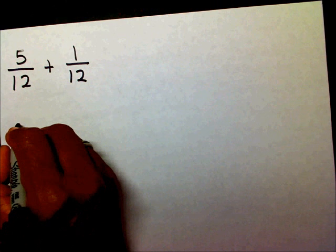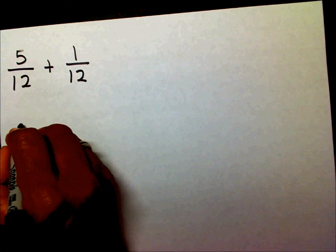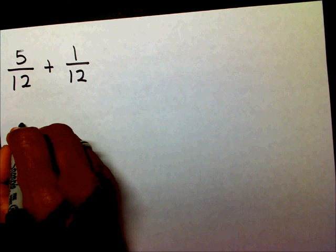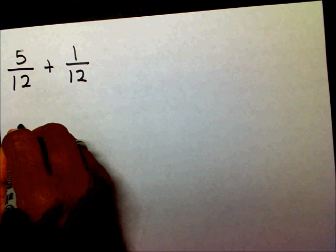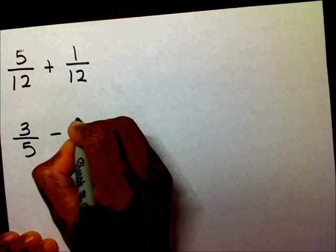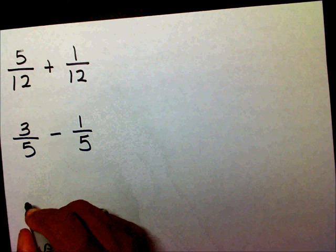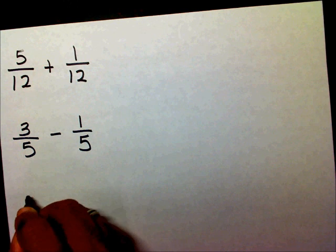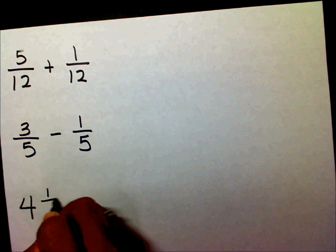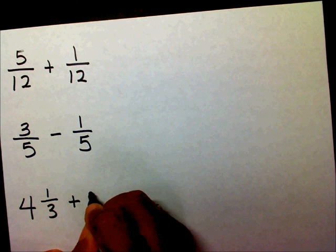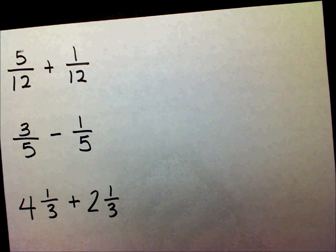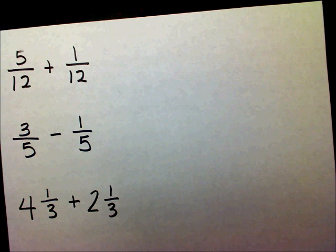Let me give you two to do. Let's go with 5/12 plus 1/12. Let's do another one, 3/5 minus 1/5. And let's get a mixed number: 4 and 1/3 plus 2 and 1/3. If you'll please add and subtract those fractions, please pause the video.